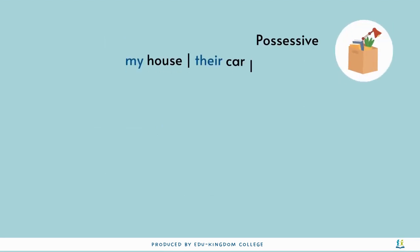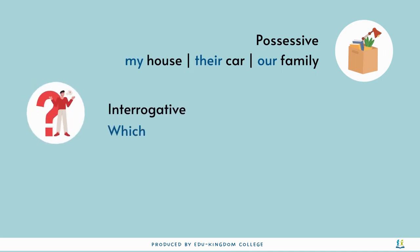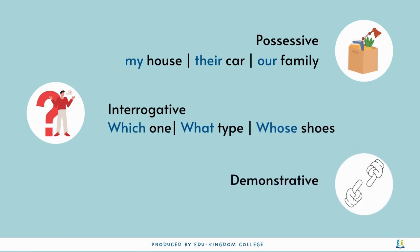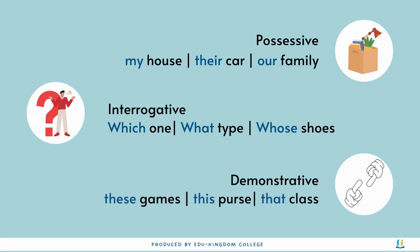Possessive adjectives help point out to whom a noun belongs. Interrogative adjectives ask questions about nouns and are usually found at the beginning of a sentence. Demonstrative adjectives help tell us what noun in particular we are talking about.